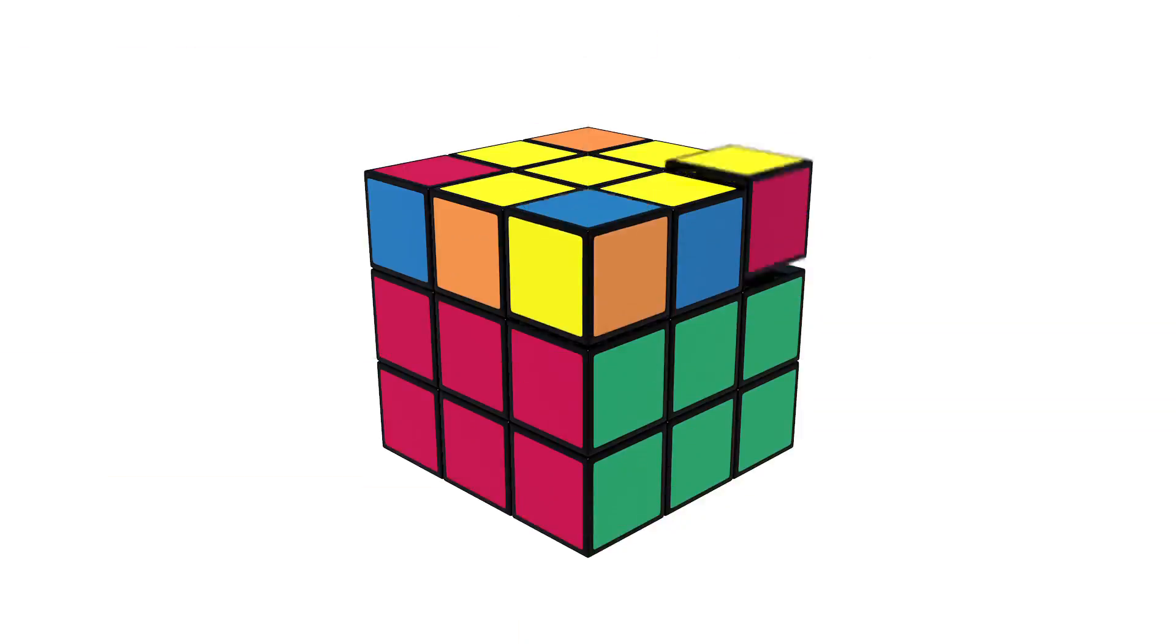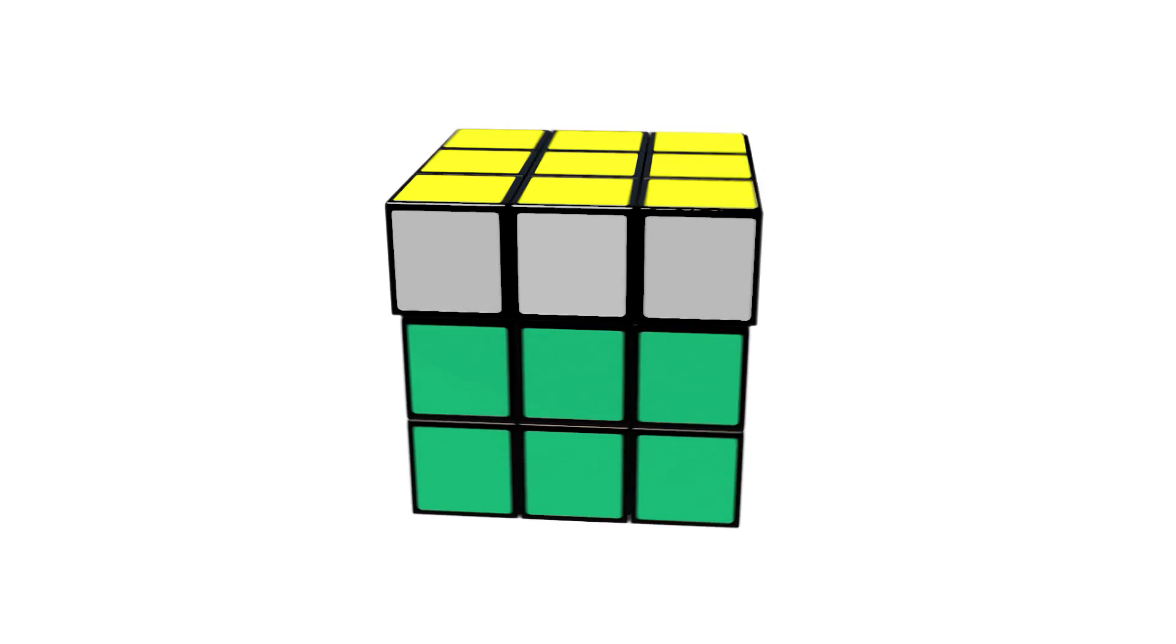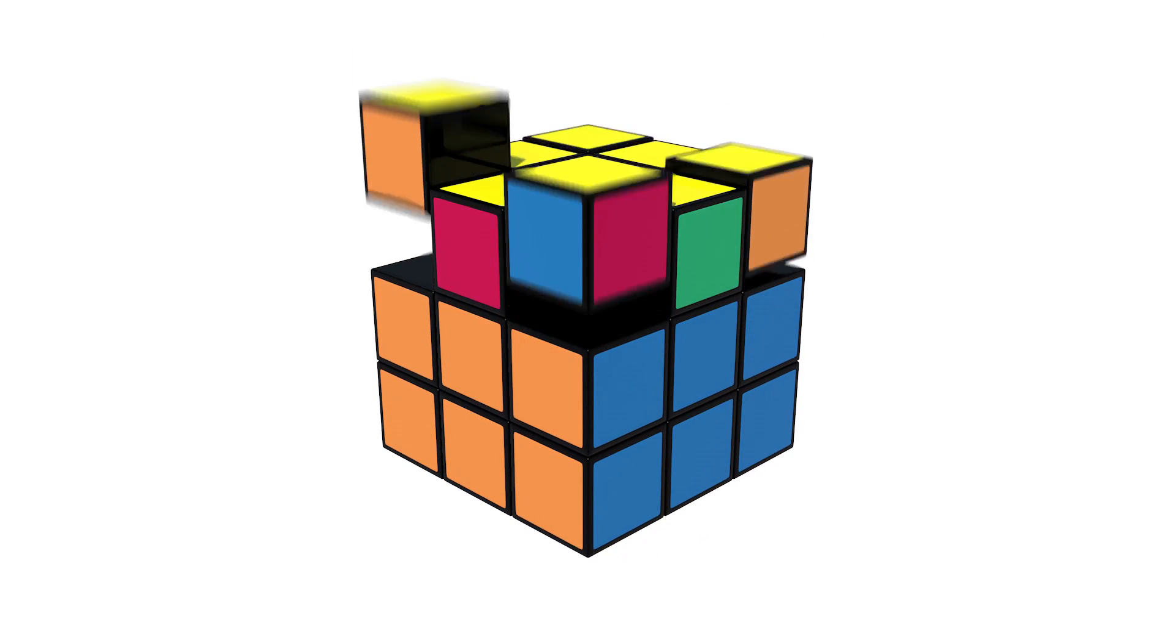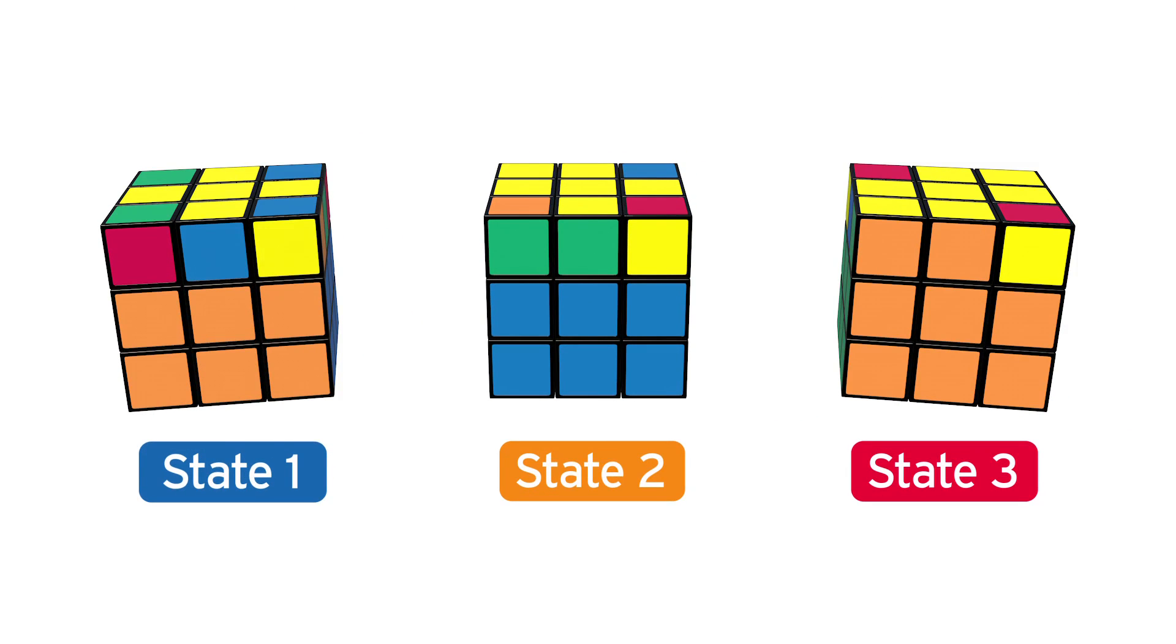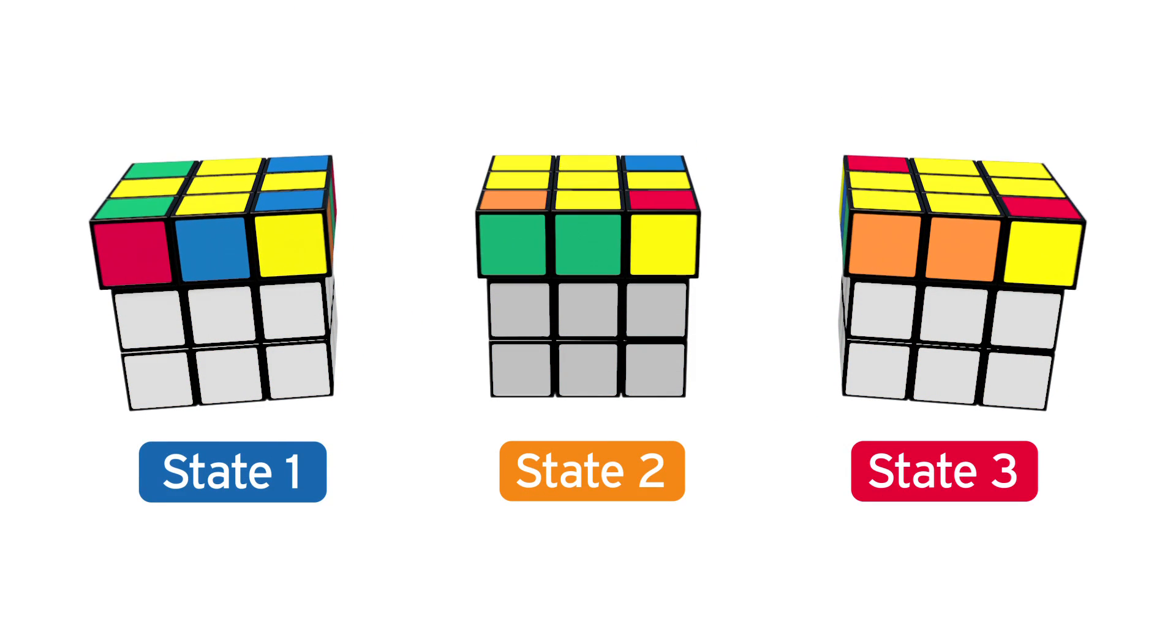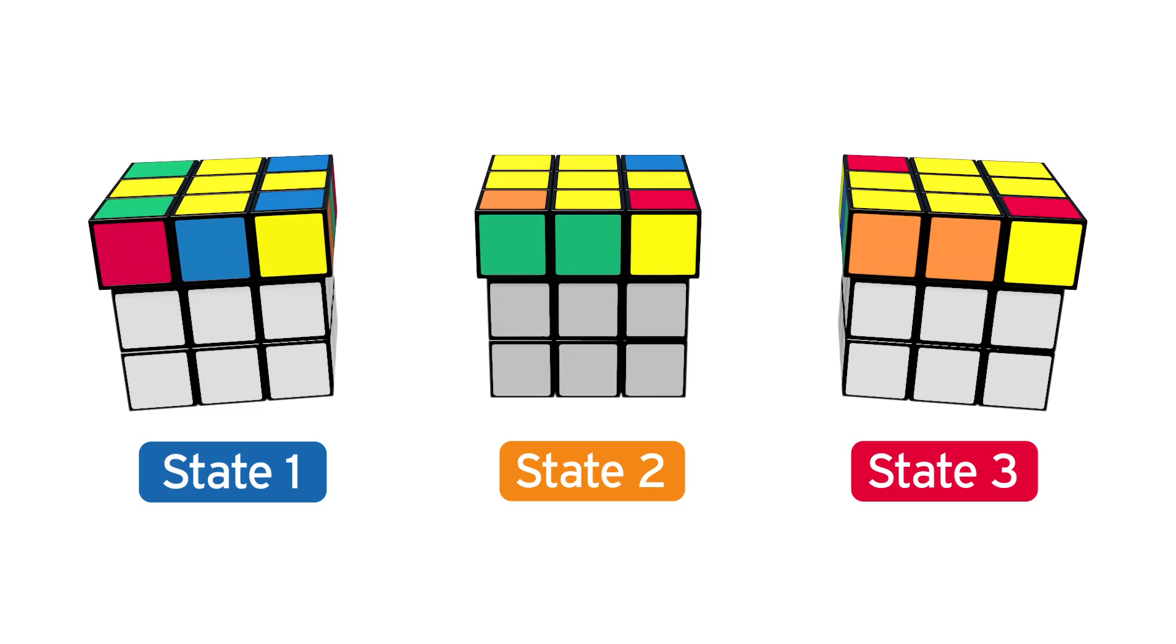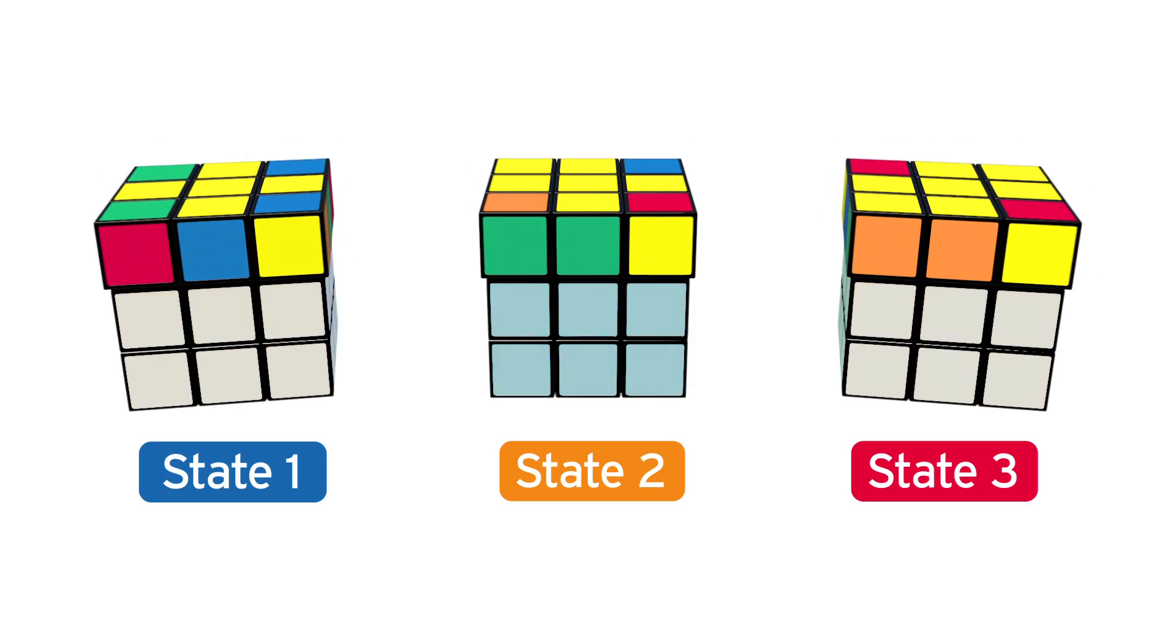This is Stage 5, Part 2, where we make all the corners on the top face yellow. Take a look at the yellow face. There should only be three possible states that your cube is in. How you hold your cube depends on which state your cube is in. Let me explain.